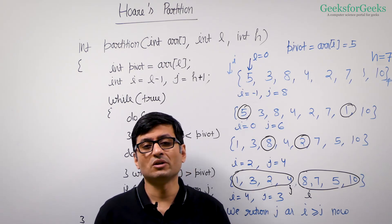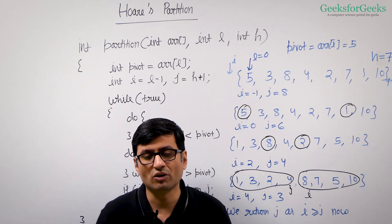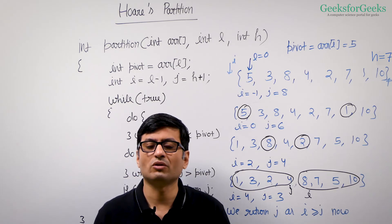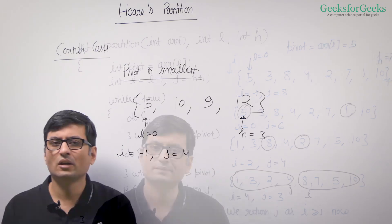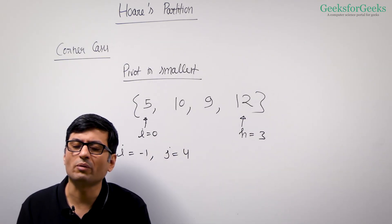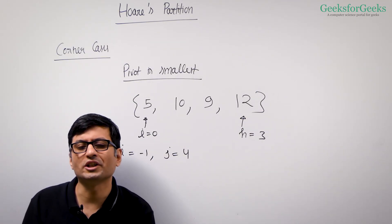In general, Hoare's partition takes fewer comparisons compared to Lomuto partition and practically works much better than Lomuto partition on average.